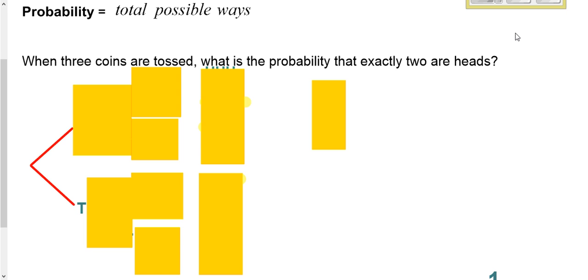Probability can be done in a couple different ways. Sometimes it's helpful to draw out a diagram. So suppose you had three coins being tossed. What's the probability of getting exactly two heads?